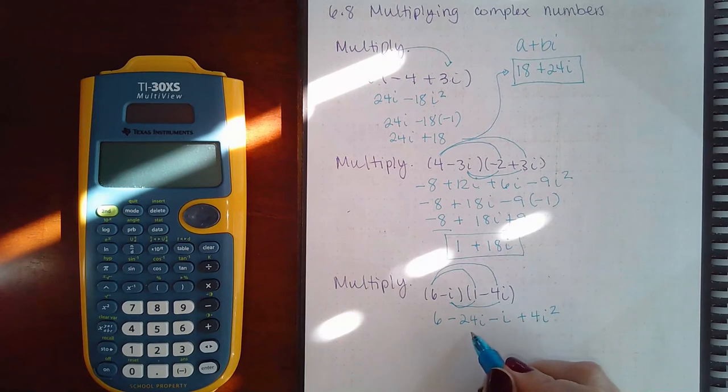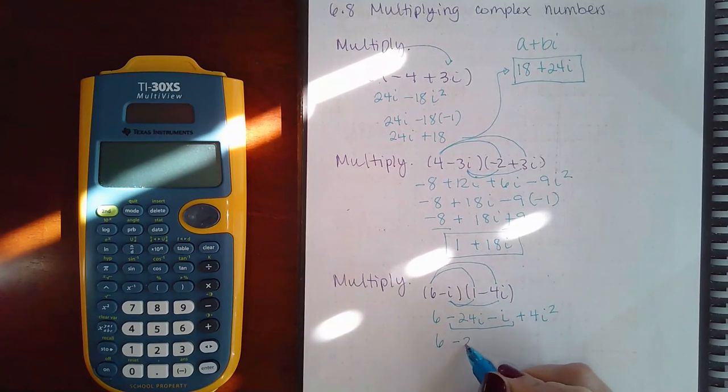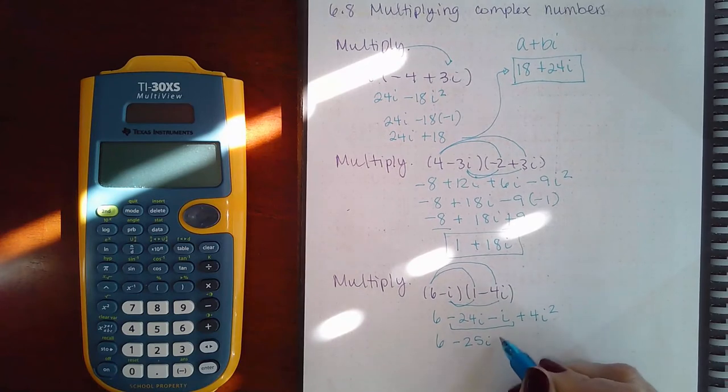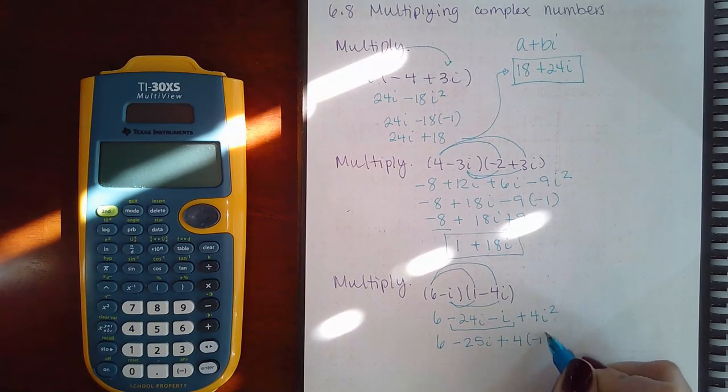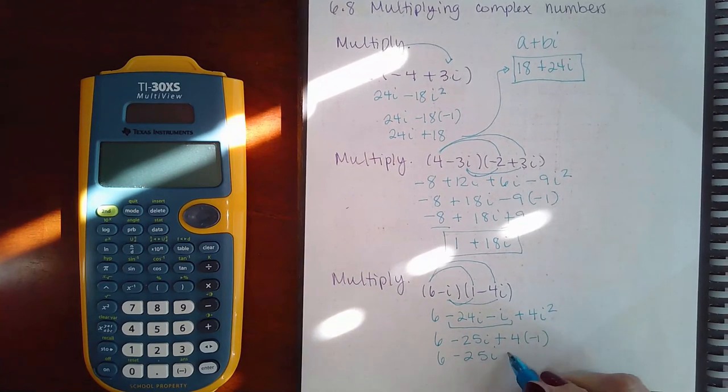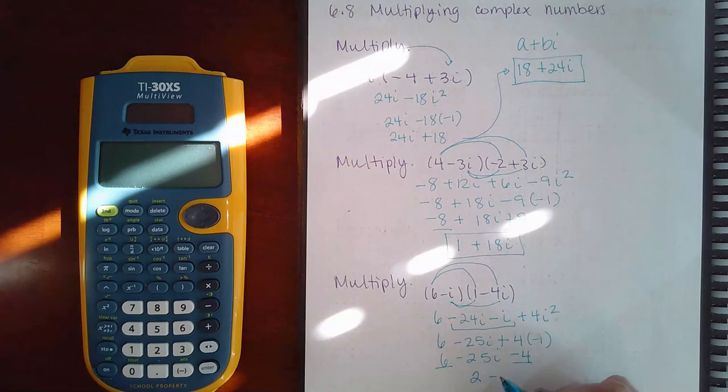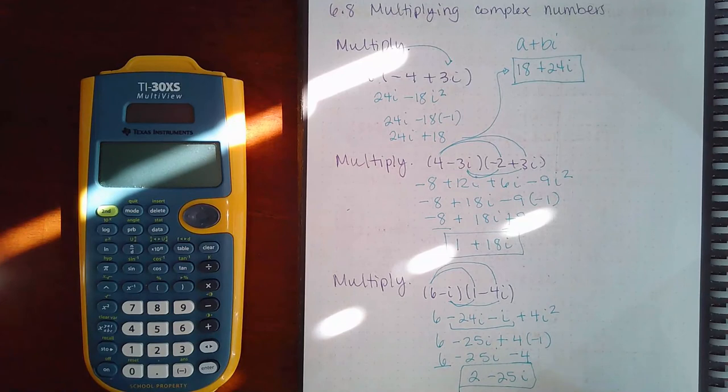So the 6 will stay the 6. These can combine into negative 25i. This becomes 4 times negative 1, which eventually becomes a negative 4. And then 6 minus 4 is 2. So your final result is 2 minus 25i.